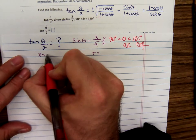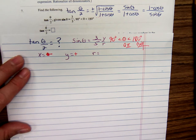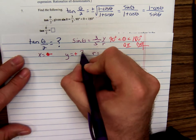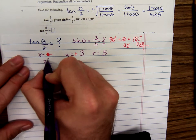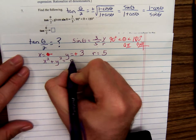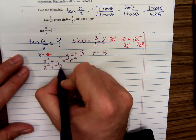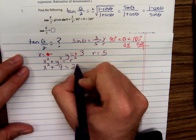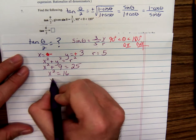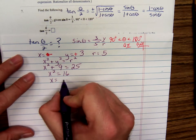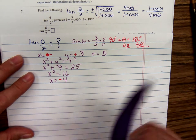In quadrant 2, x is negative, y is positive. So y over r is 3 over 5. Now x squared plus y squared is r squared. The y squared would be 3 squared, so that's 9. The r squared is 5 squared, 25. So x squared is 16. x is going to be negative 4, because you're in quadrant 2.